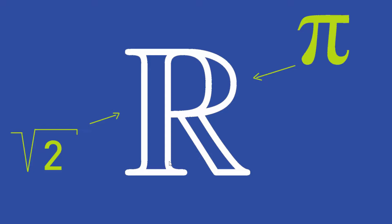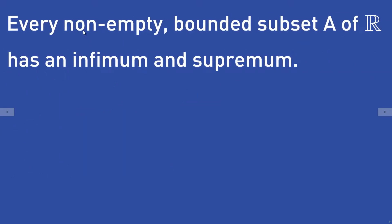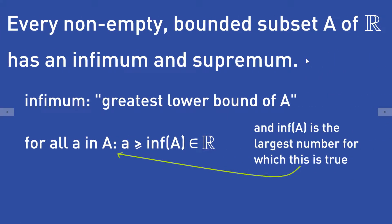There is another reason why the real numbers are important. The following holds true in the real numbers and somehow uniquely classifies them. Every non-empty bounded subset A of the real numbers has an infimum and supremum. The infimum of a subset A is defined as the greatest lower bound of a subset A. This means for every element a in the subset A, the element a has to be larger or equal to the infimum of the subset A, which is a real number. And the infimum of the subset A is the largest number for which this condition is true.